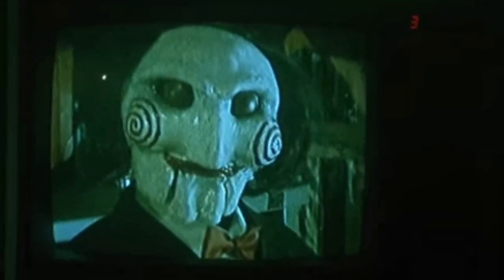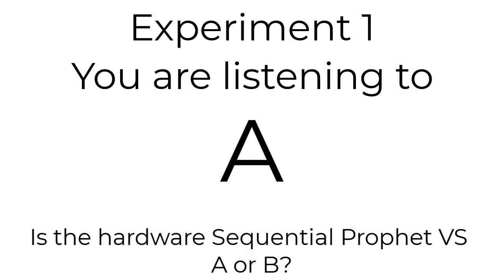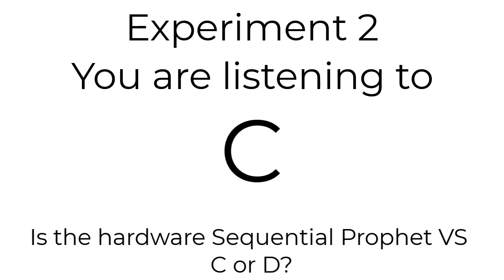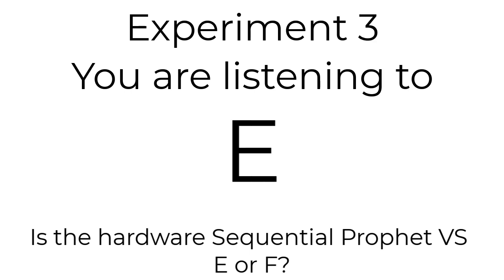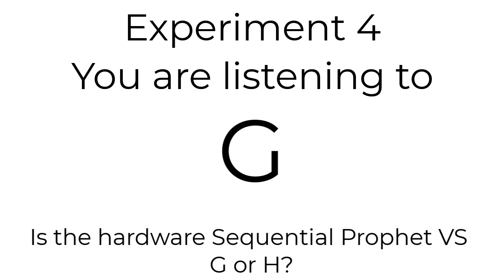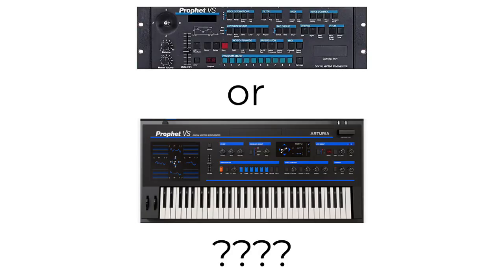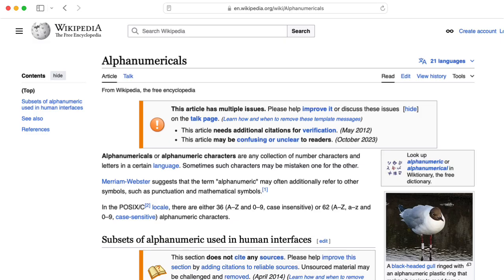I want to play a game. It's going to be like a visit to the optometrist. I'm going to play you pairs of musical passages. Within each pair, they're playing the same notes using the same patch. One of the instances of the pair is using the hardware Sequential Prophet VS, and the other is using the Arturia SoftSyn. Your mission is to tell me which is the original Sequential Prophet VS hardware. You can report your findings by leaving a comment below.